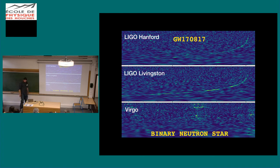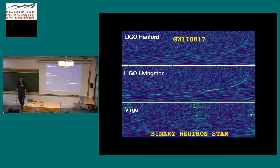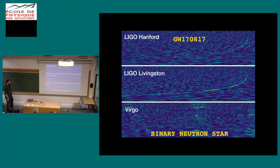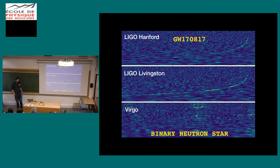Before we get on to the second lecture, which was going to be about parameter estimation methods - how do we actually do it in practice - I did want to take a few minutes to show you some of the results from the binary neutron star detection GW170817 that we made last year. Hopefully now that you have a full understanding of what physics is driving these results, you can put all this in perspective.